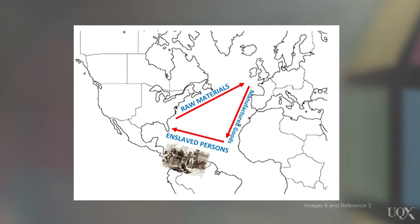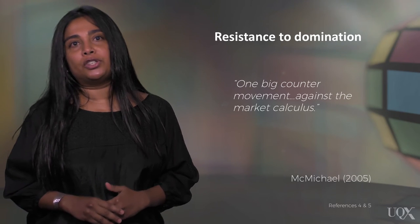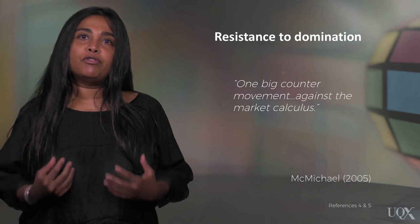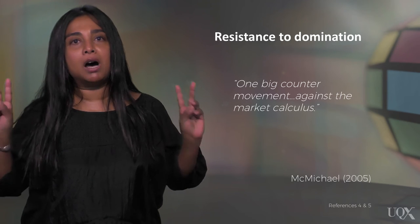This also means that we need to acknowledge and understand the role of resistance in development. Practices of resistance have been directed against relations of domination, such as enslavement, dispossession through the enclosures, colonialism and its racialised methods of rule, as well as to challenge gender and class relations. The issues we have raised here have long been recognised. In the 21st century, the multiple practices of resistance to domination in development have been referred to by Professor Phil McMichael as one big counter-movement against the market calculus.